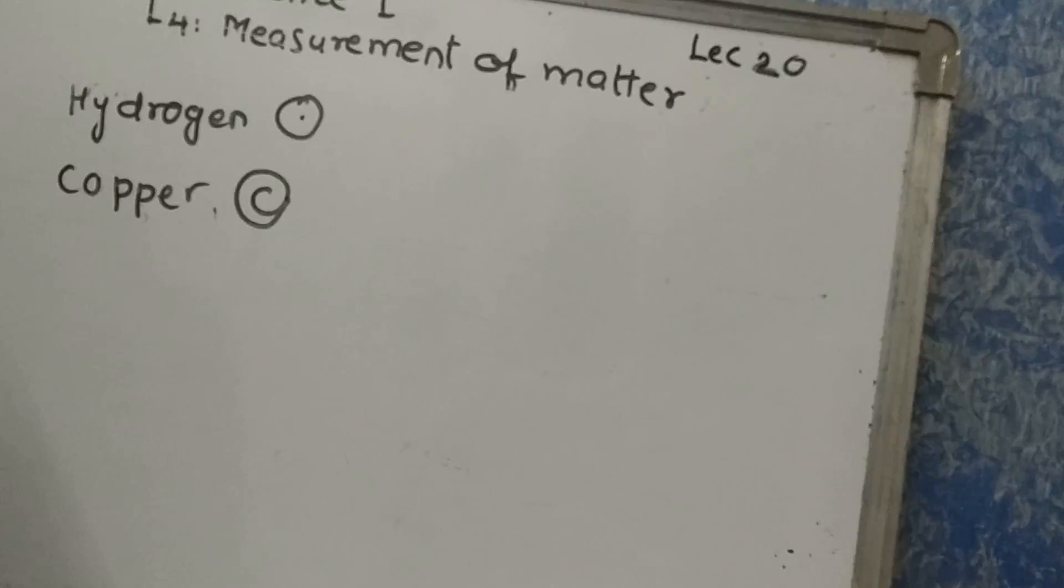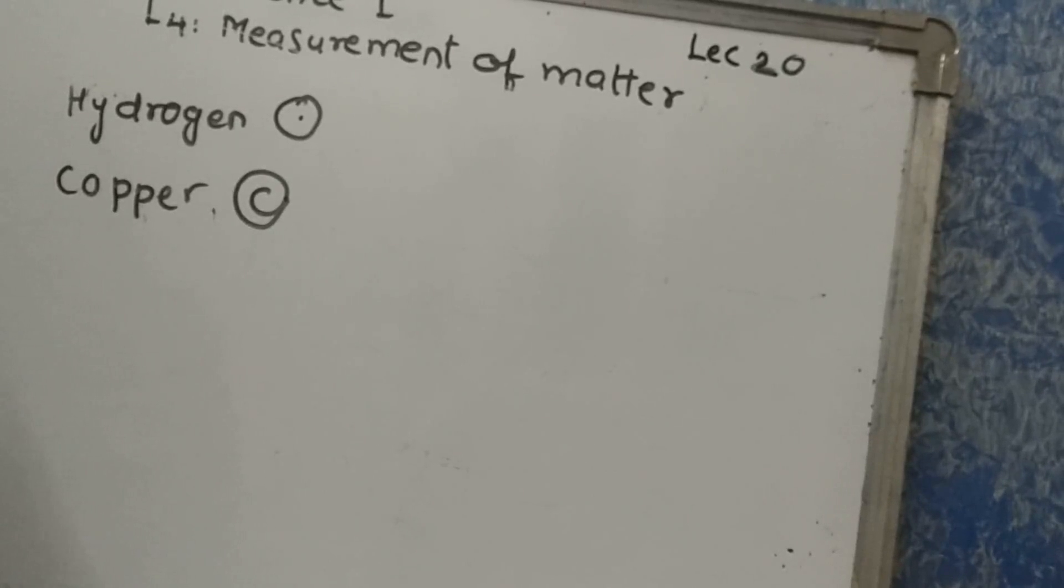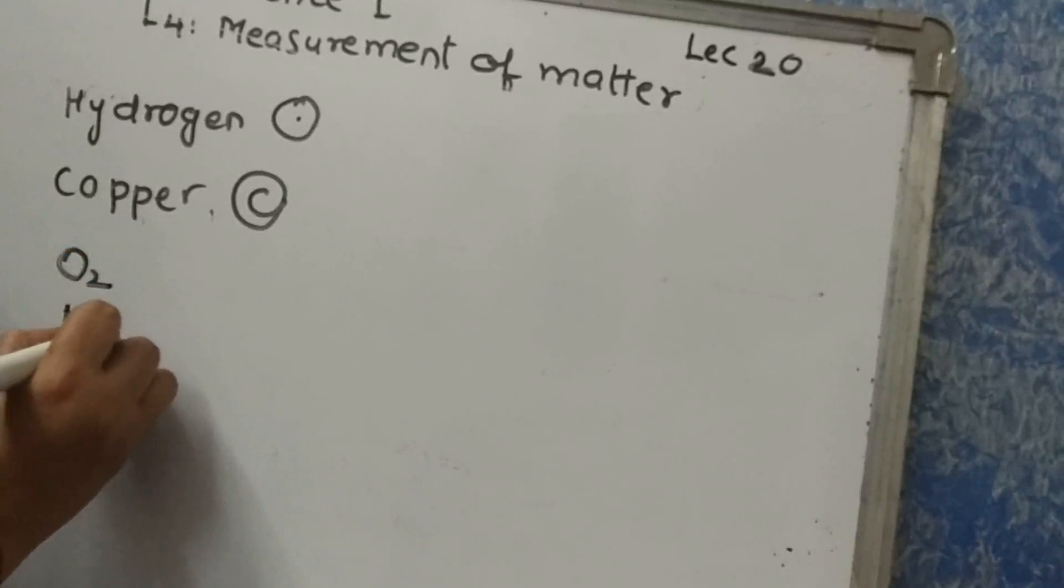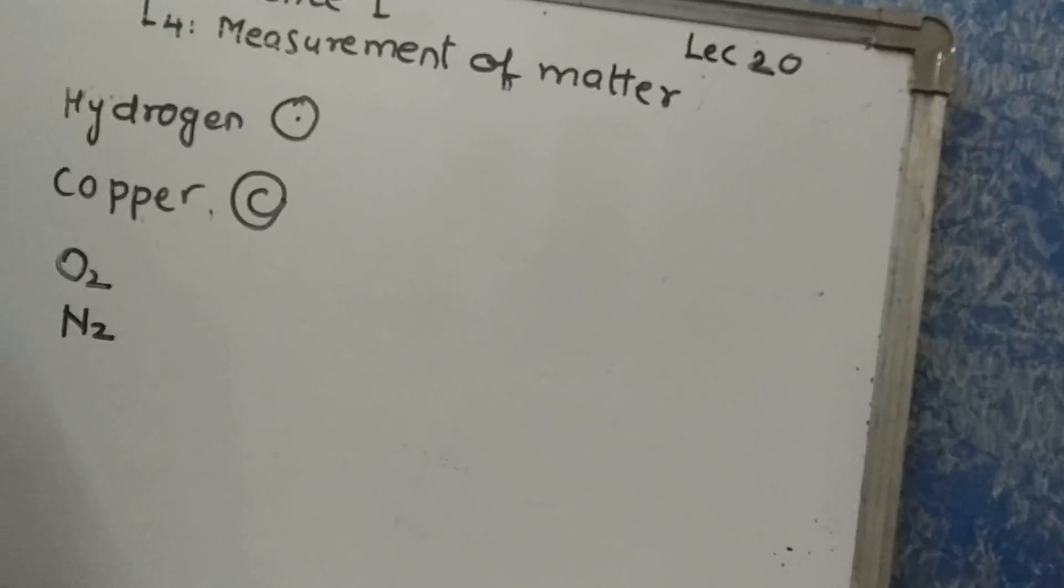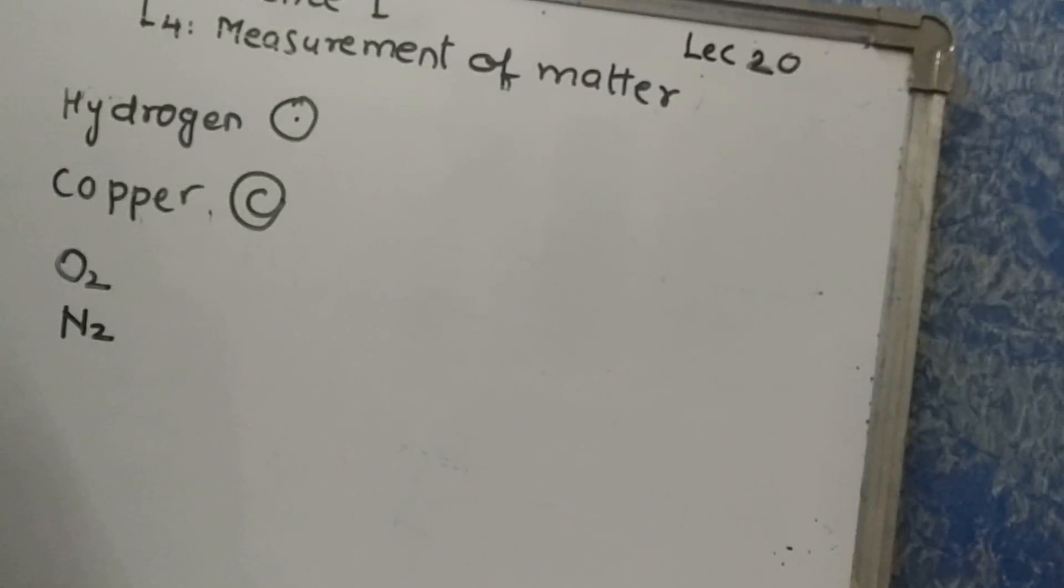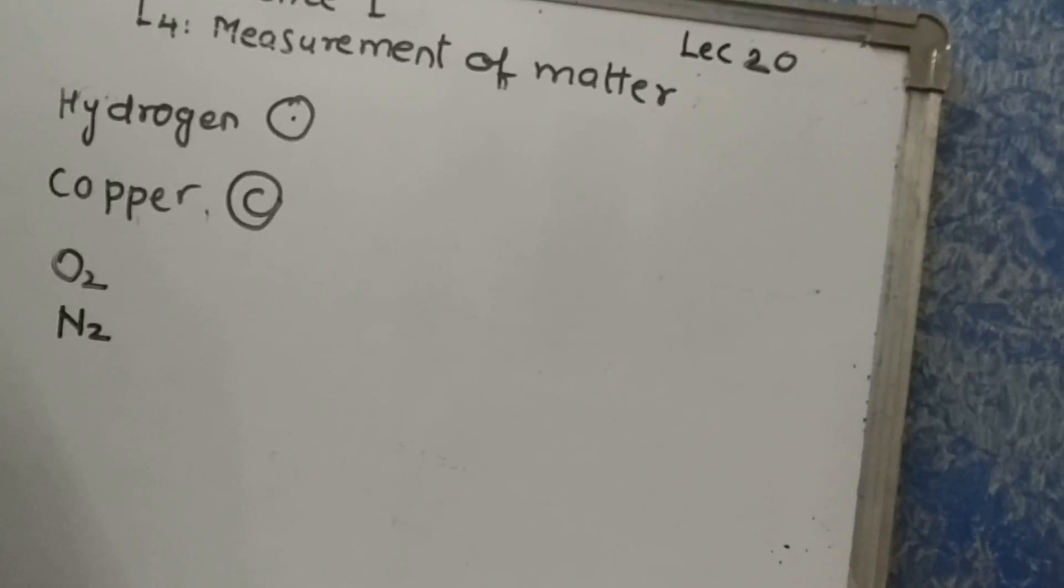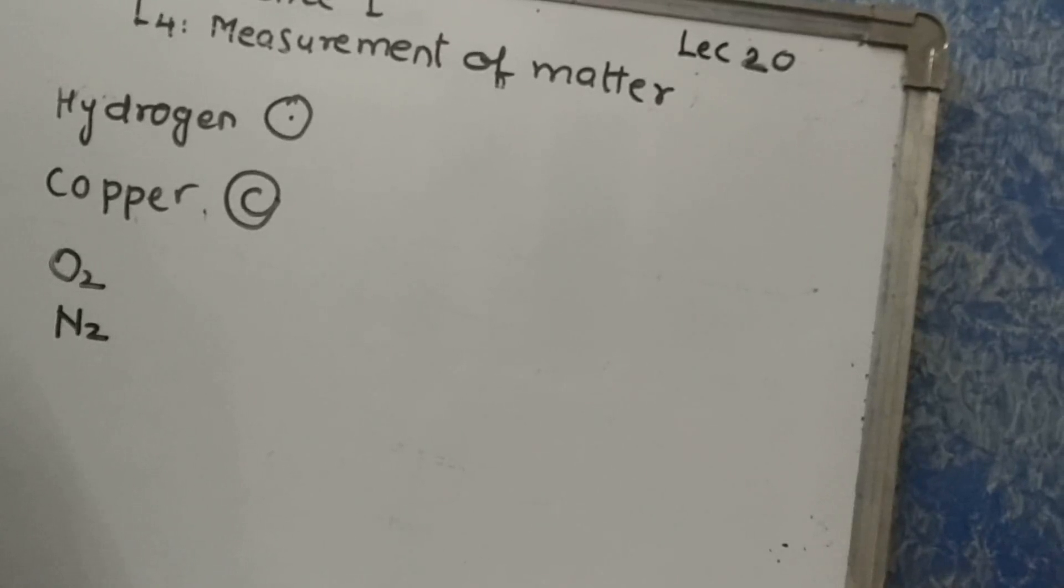For example, the elements oxygen and nitrogen are in a diatomic molecular state as O2 and N2. O2 N2 means diatomic molecular state. When atoms of different elements combine with each other, the molecules of compounds are formed. In other words, compounds are formed by chemical attraction between different elements.